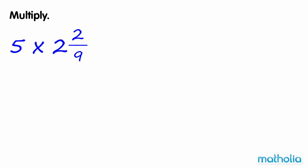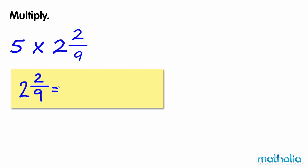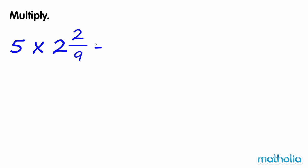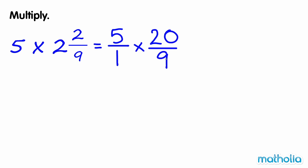Multiply. We need to find five times two and two-ninths. We can express two and two-ninths as the improper fraction twenty-ninths. Five times two and two-ninths is equal to five over one times twenty-ninths, which is equal to one hundred-ninths.